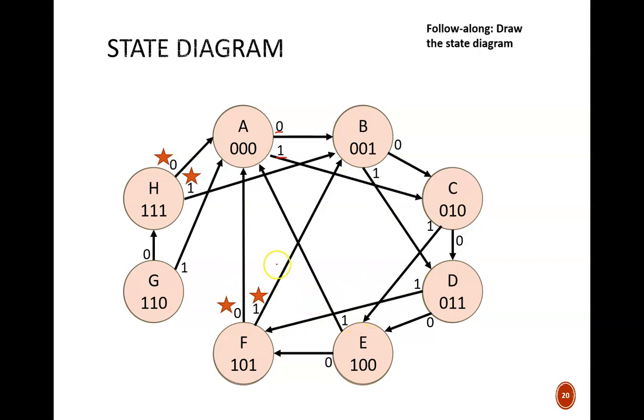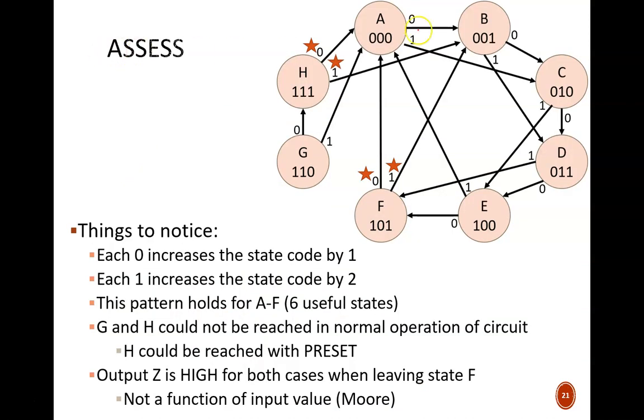As a double check, I note there were 16 rows on the table, and there are 16 arrows on this diagram, two leaving each node. Now, what patterns do you notice in the state diagram? I notice that every input of 0 causes the circuit to move up by one node, and every input of 1 causes the circuit to move up by two nodes. This pattern stops at F, which cycles back to either A or B.